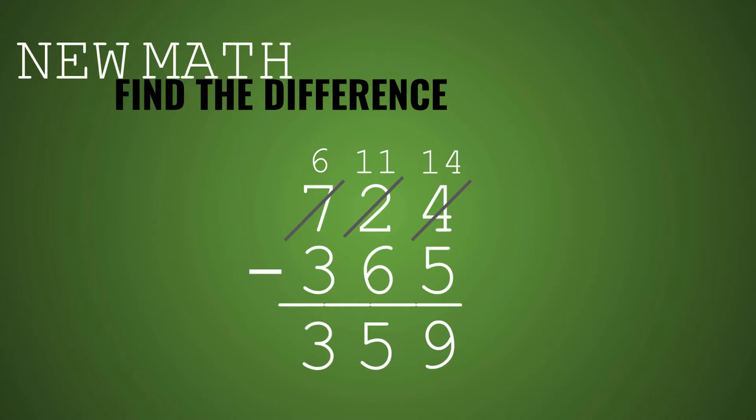So we end up with 359. But again, students were becoming complacent with a standard algorithm and people were worried that they were just memorizing certain ways to do things. And that's when Common Core came along.